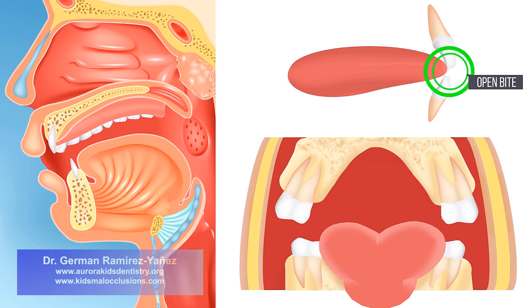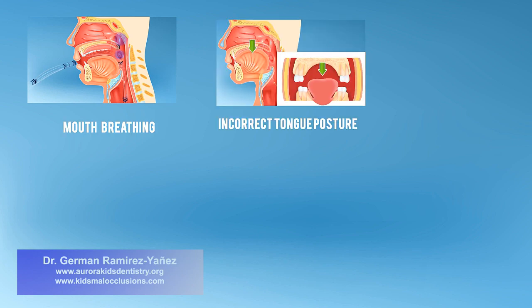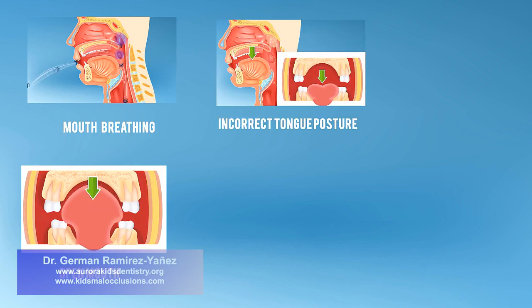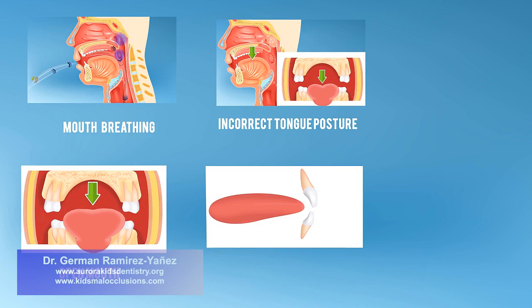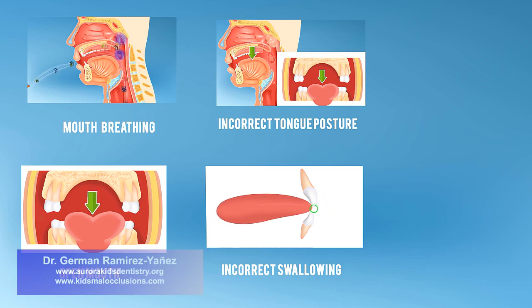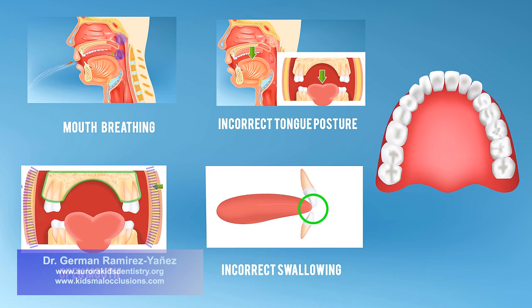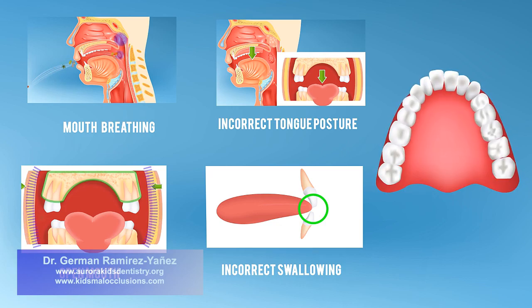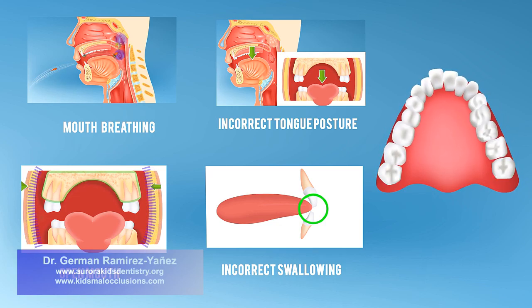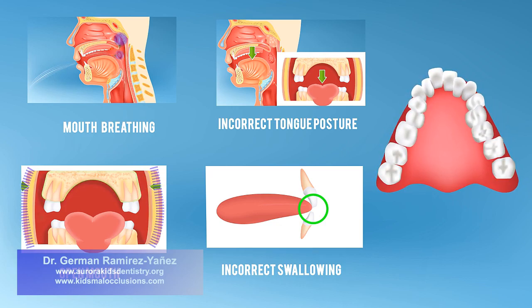All those dysfunctions — mouth breathing, incorrect tongue posture, open mouth, and incorrect swallowing — are going to continue affecting the growth and development of your upper and lower jaws. And as a consequence, there is less room for your teeth, and they become crooked.